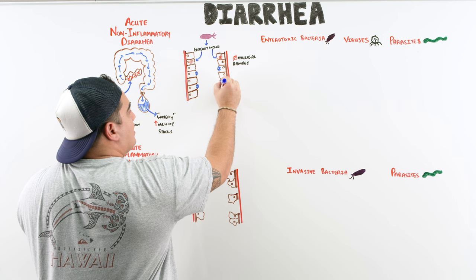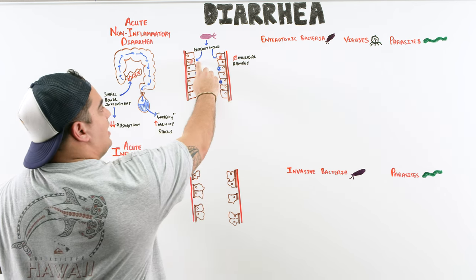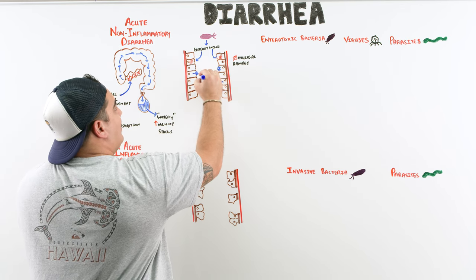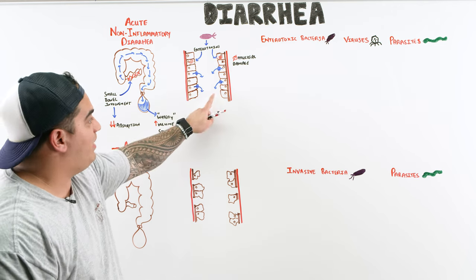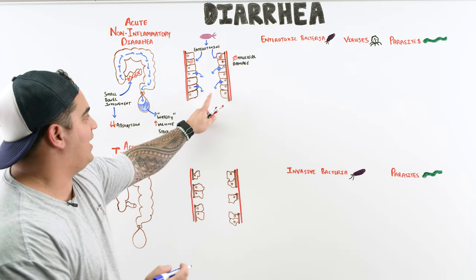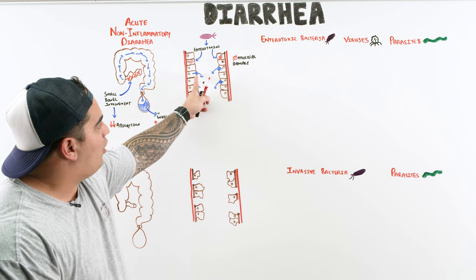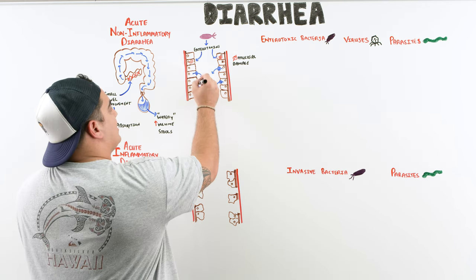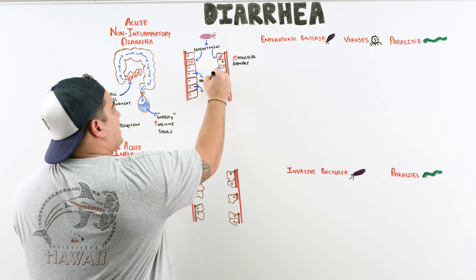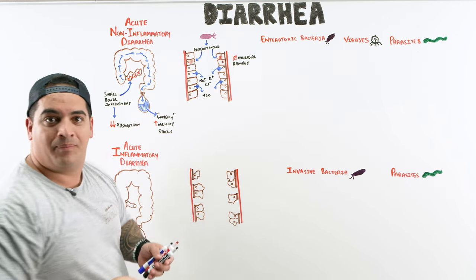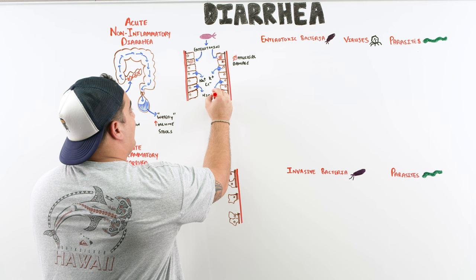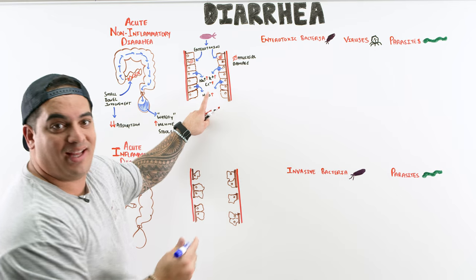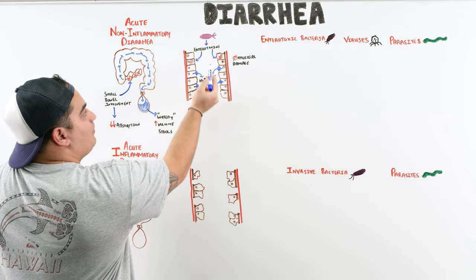The stimulation of these channels causes the mucosal cells to begin secreting things into the intestinal lumen. They're not being damaged per se — they're being hijacked by the enterotoxins to secrete sodium, potassium, chloride, and large amounts of water.